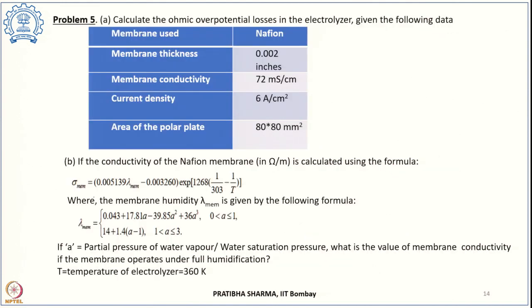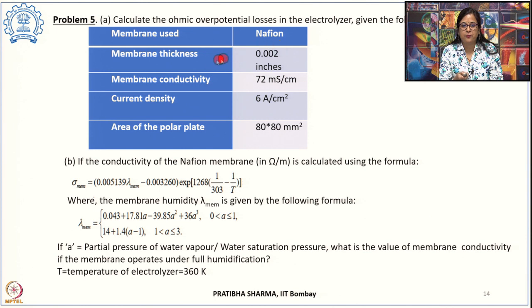The next problem asks to calculate ohmic overvoltage losses for an electrolyzer. The membrane used is Nafion, with thickness 0.002 inches, conductivity 72 millisiemens per centimeter, current density 6 amperes per centimeter square, and electrode plate area 80×80 cm square.